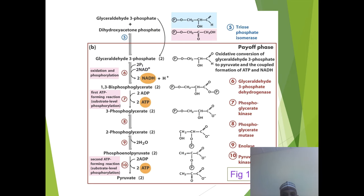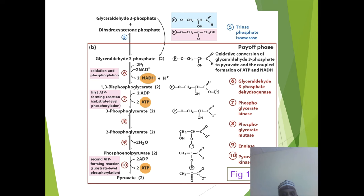The second phase is the payoff phase, where ATP is generated. From glyceraldehyde-3-phosphate, NAD+ and inorganic phosphate enter, producing NADH — a high-energy compound that can go into oxidative phosphorylation — and 1,3-bisphosphoglycerate. Two ADP molecules enter and two ATP molecules are produced. This is the phase where energy is generated.